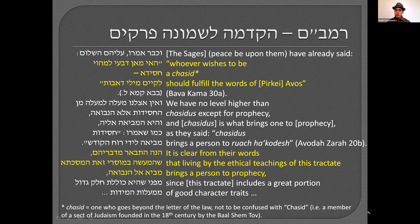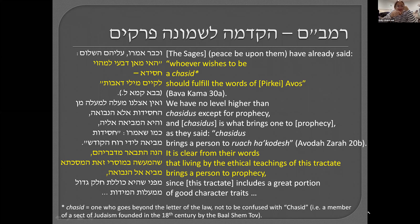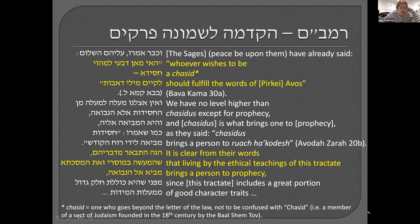Whenever you see chasid in Pirkei Avos, it means someone who goes beyond the letter of the law. I always think 'pious' has a negative connotation — like you're above everyone else — but strictly speaking it's positive. We have no level higher than chasidus except for prophecy, and chasidus is what brings one to prophecy. As Chazal said, chasidus brings a person to Ruach HaKodesh. It is clear from their words that living by the ethical teachings of this tractate brings a person to prophecy, since the tractate includes a great portion of good character traits.